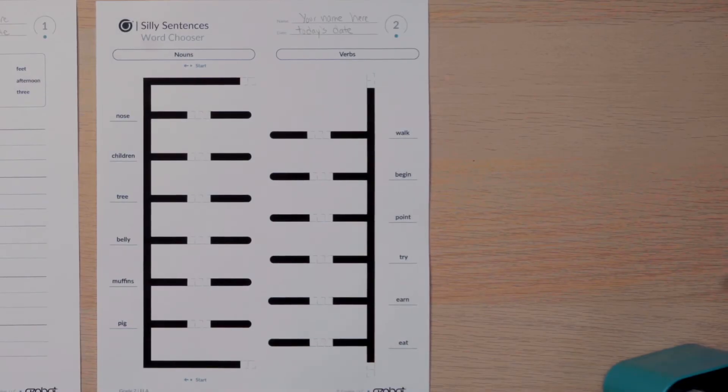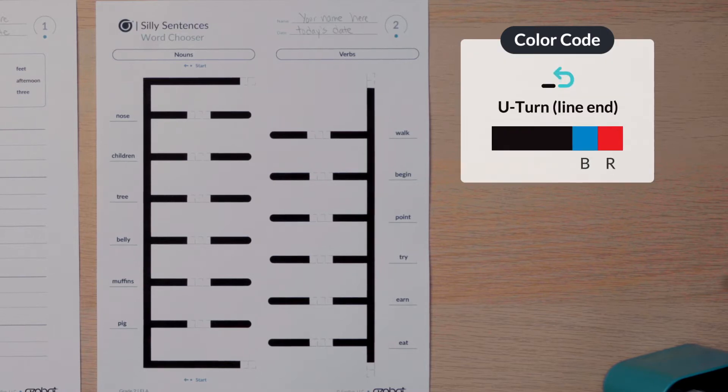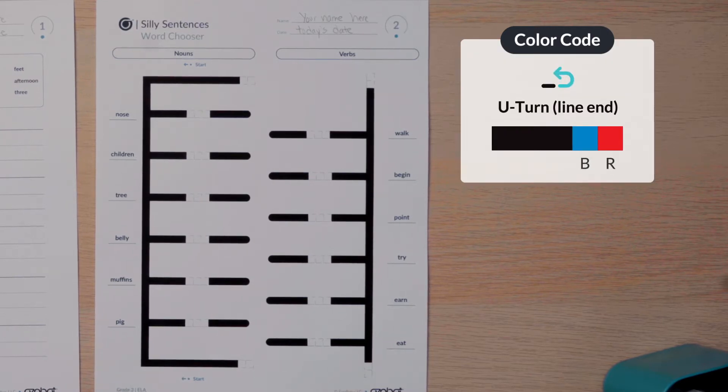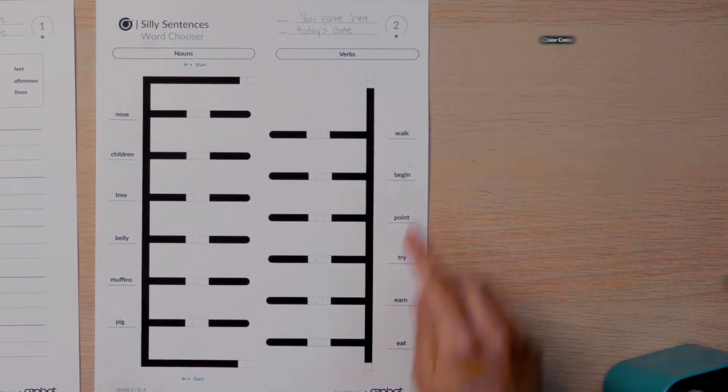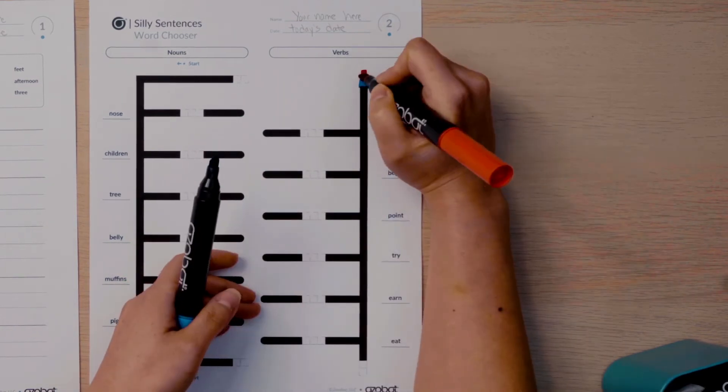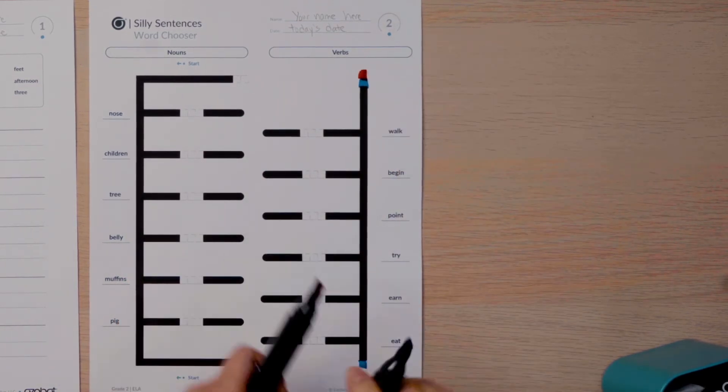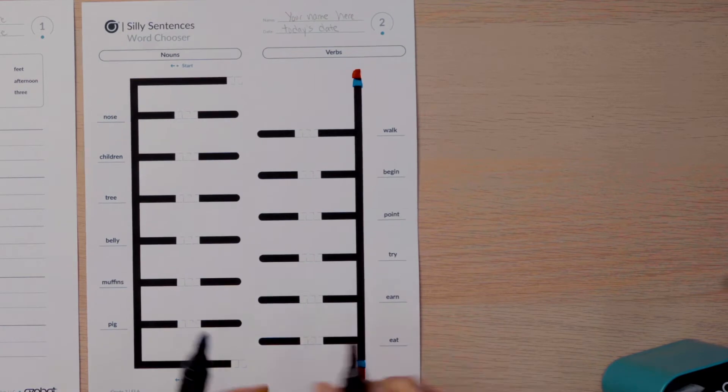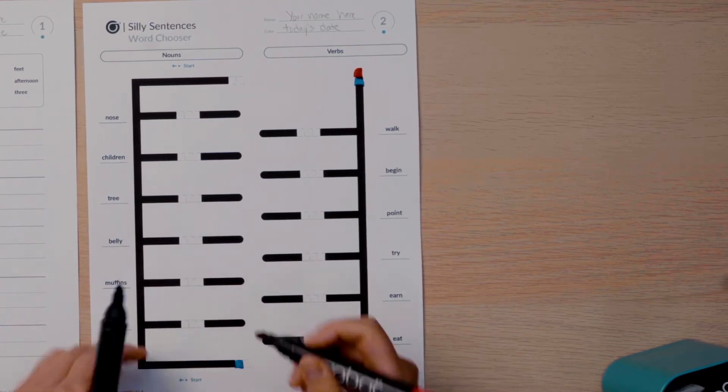First, you need to place color codes on your silly sentences word chooser to program your Ozobot. The first code you will add is a U-turn code. The code is blue, red. You will fill in the U-turn code in four places. Both ends on the right side of the chooser labeled verbs and both ends of the left side of the chooser labeled nouns.